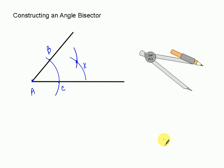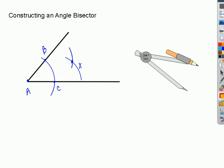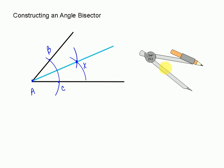You're pretty much done. Now use your straight edge and connect point A to point X. I have now constructed an angle bisector. The angle in here — let's call this angle 1 that we created, and angle 2. Angle 1 here will be congruent to angle 2. This is your ray AX, which is your angle bisector.